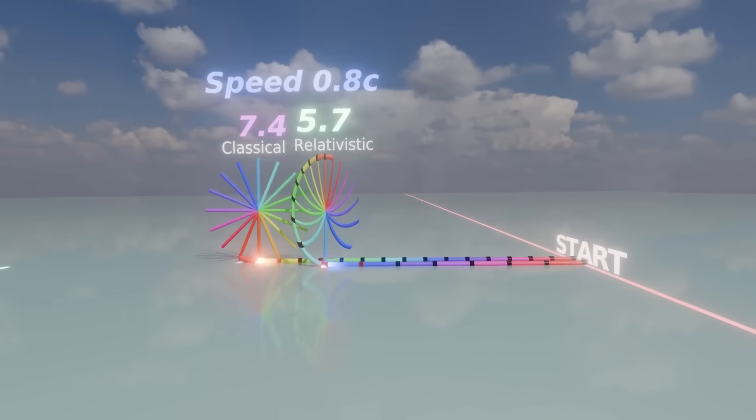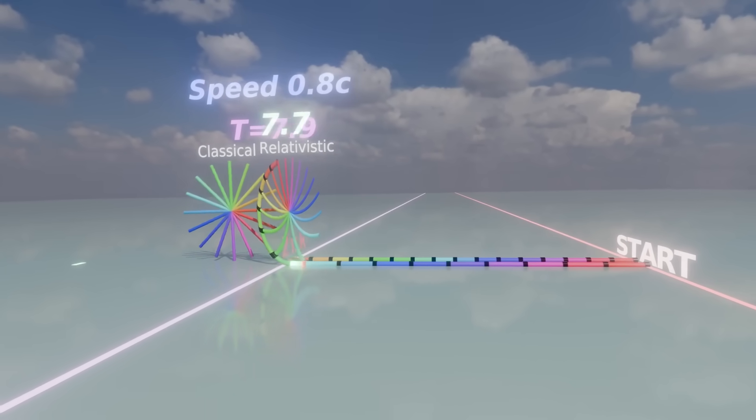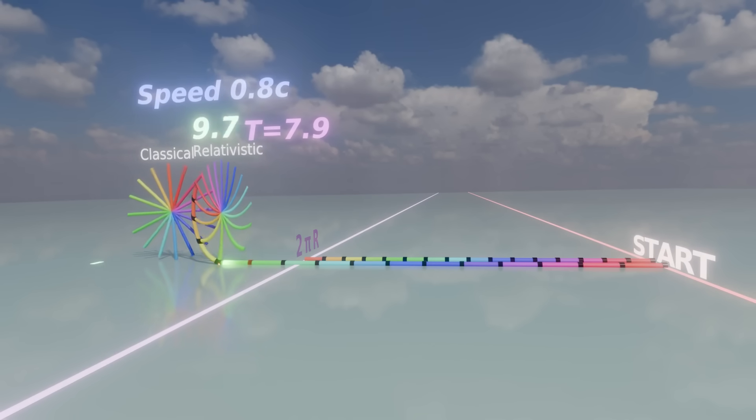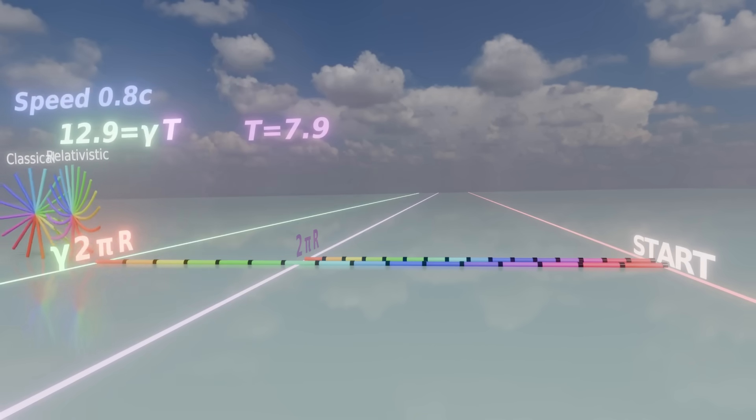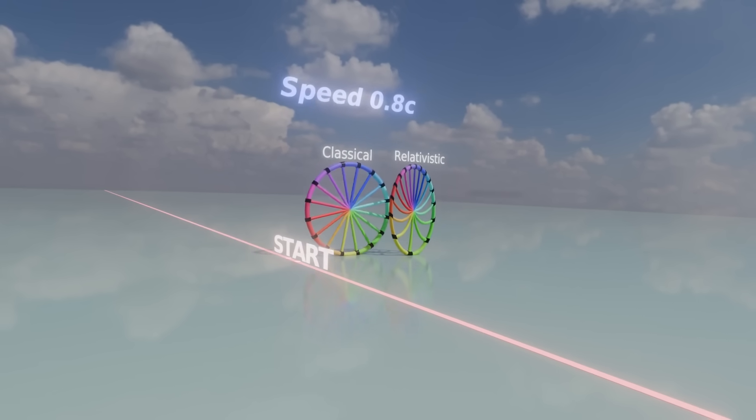In fact, it is longer by one gamma, where gamma is the Lorentz factor corresponding to the speed of the axis, or equivalently the orbital speed of the original non-traveling wheel.